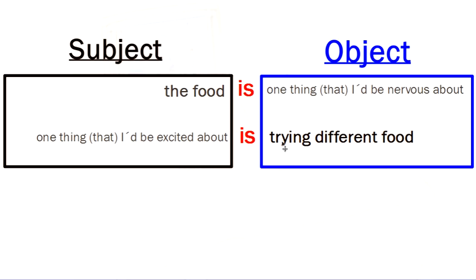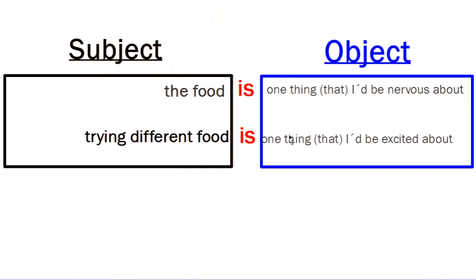And I can say, The food is one thing that I'd be nervous about. And that's okay, right? Now remember, down here I had a sentence that says, One thing that I'd be excited about is trying different food. Now, trying different food was the gerund phrase. And that's the noun, that's the idea. And again, I can use this idea first and put the noun phrase second. And I can say, Trying different food is one thing that I'd be excited about.